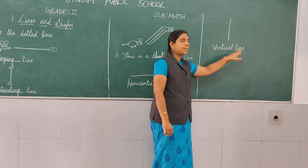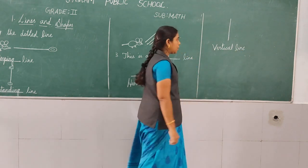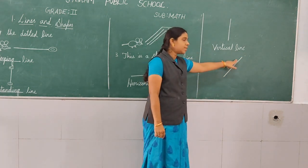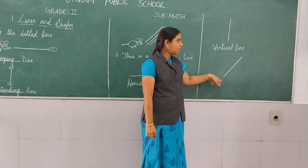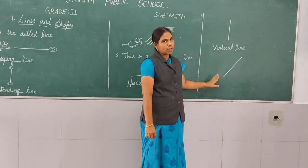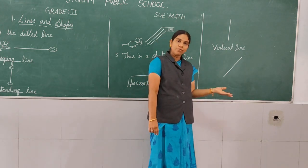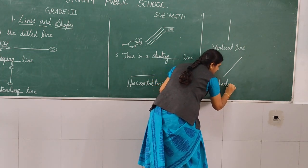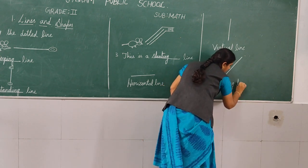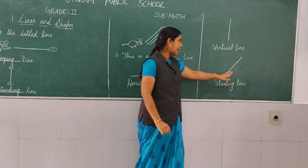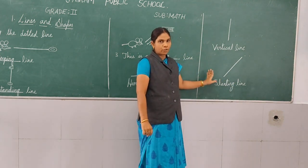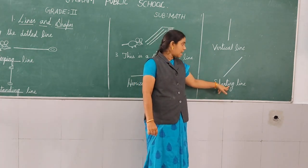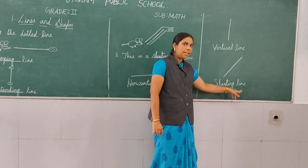What is one more line, children? Yes, very good — what is this? Slanting, isn't it? So the line is in a slanting position, we call it a slanting line. The name stays the same — slanting line. Spell along with me: S-L-A-N-T-I-N-G — slanting line. L-I-N-E — slanting line.